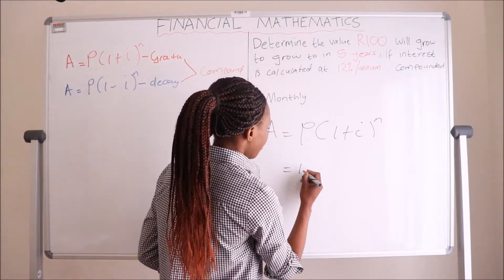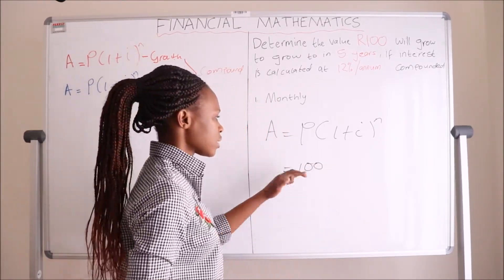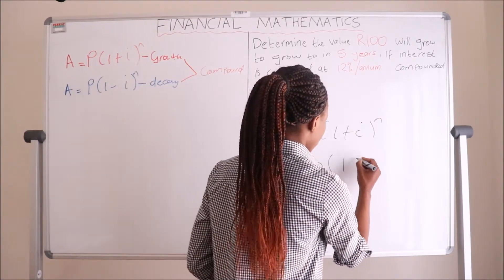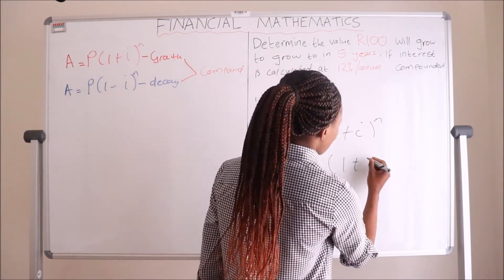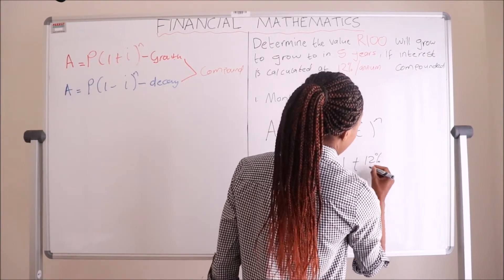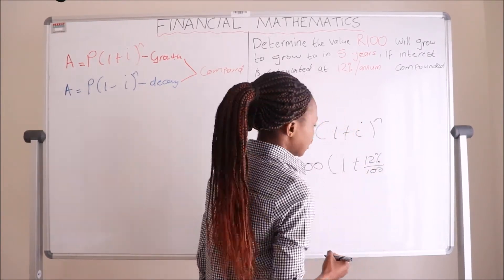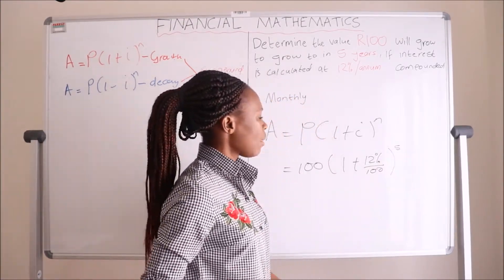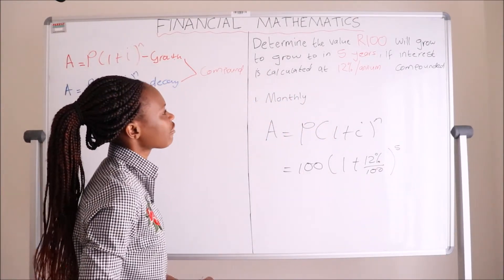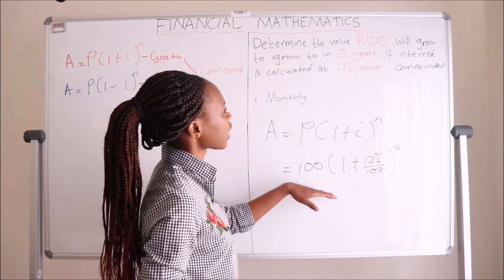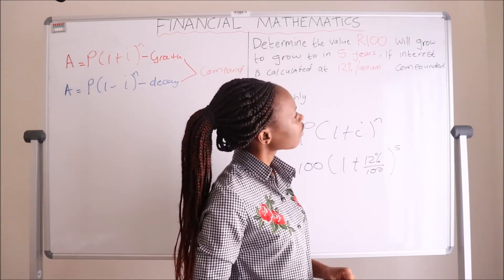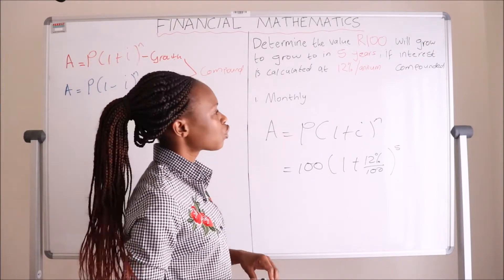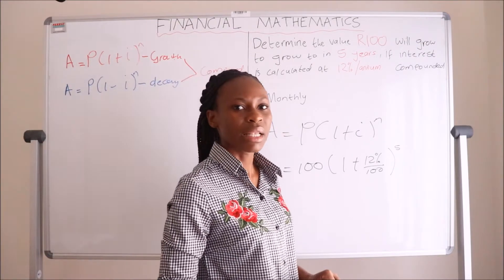Our principal value P is 100 rand — the initial investment — into one plus our i which is 12%. Remember to divide that by 100, then this will be to the exponent of 5. But with this setup alone, I would only have calculated 100 rand growing over five years at 12% per annum without monthly compounding.